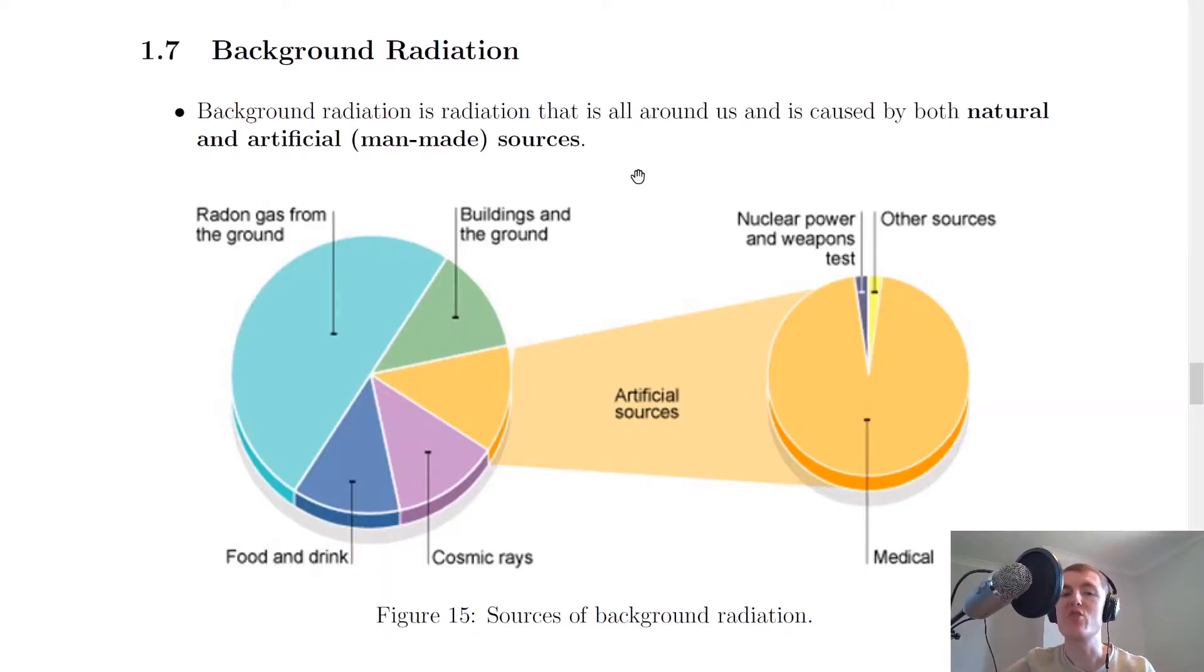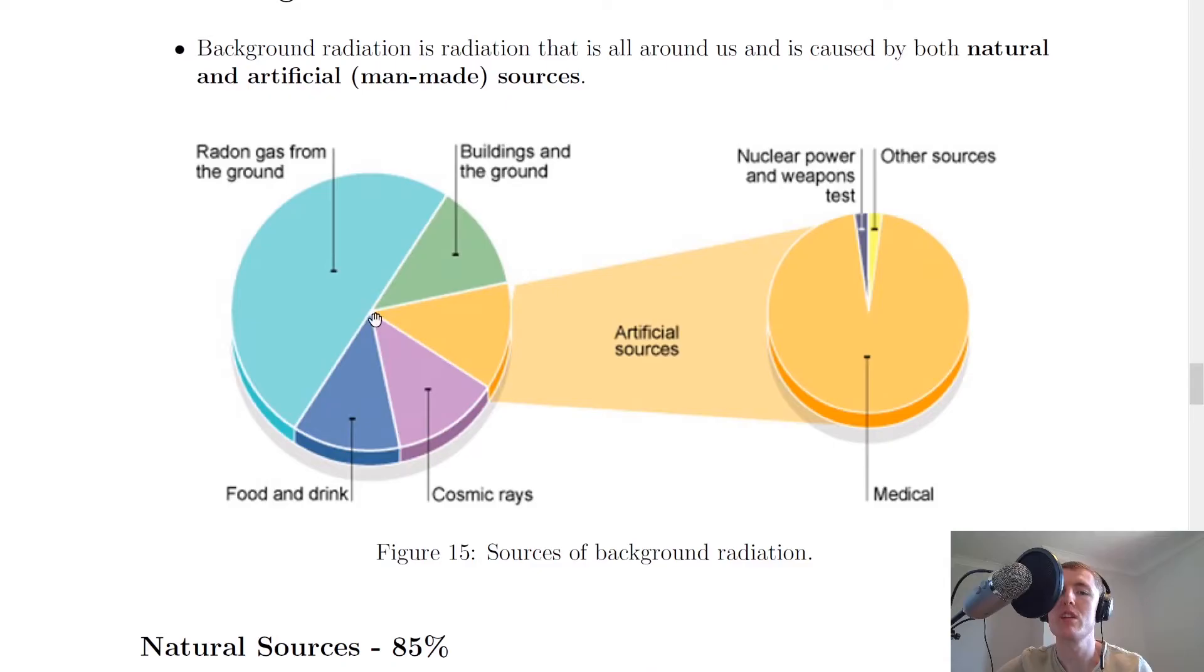Background radiation is radiation that is all around us and is caused by both natural and artificial, i.e. man-made, sources. So if we look at the pie charts here, we'll see the breakdown of natural and artificial sources.